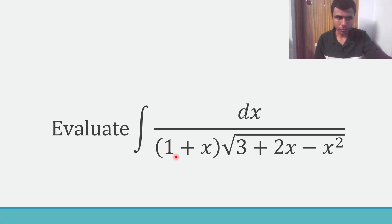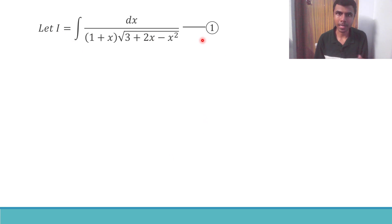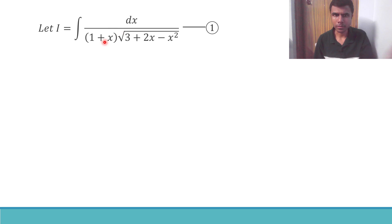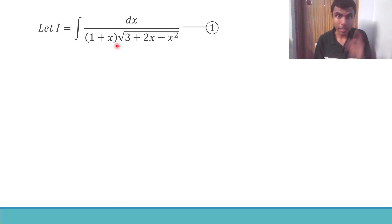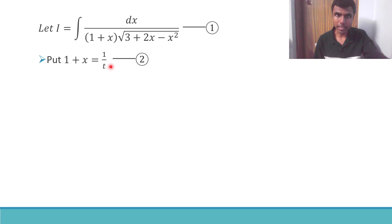First, take the given integral as I and mark it as equation 1. Now for this kind of question, you see there is a linear term like (x plus 1) and we have a quadratic expression under the square root. The technique is we need to use substitution: put 1 plus x as 1 by t, and mark it as equation 2.